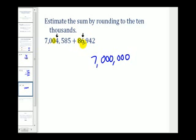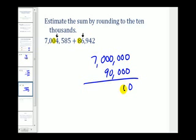The six tells us to round up, so this would round to 90,000. Notice most of these columns are zeros. Here we have a nine, a zero, and a seven. So the estimation for this sum, when rounding to the ten thousands, is 7,090,000.